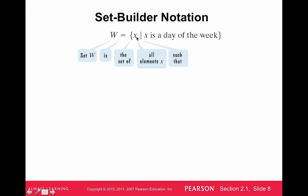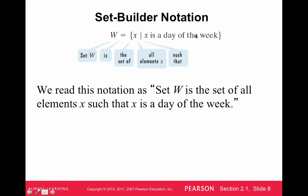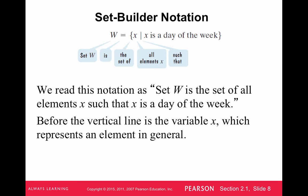So usually we use a variable for this set builder notation. And this line here, this vertical line is just such that. So here's what the elements, the elements are just individual things. And here's the rule for the elements. So we say set W is the set of all elements X such that X is a day of the week.